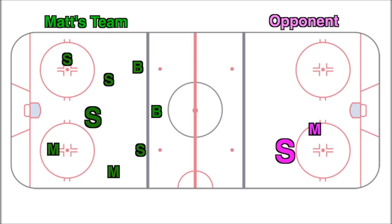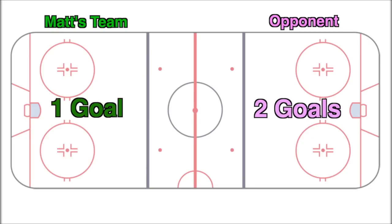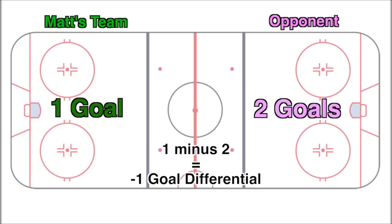At right are the opponent's shot attempts while Matt was on the ice. There are two shots on goal — both of them score — two misses and one block. So if we were to just count the goals, there'd be one for Matt's team and two for the other team when he was on the ice, and that's a minus one goal differential.